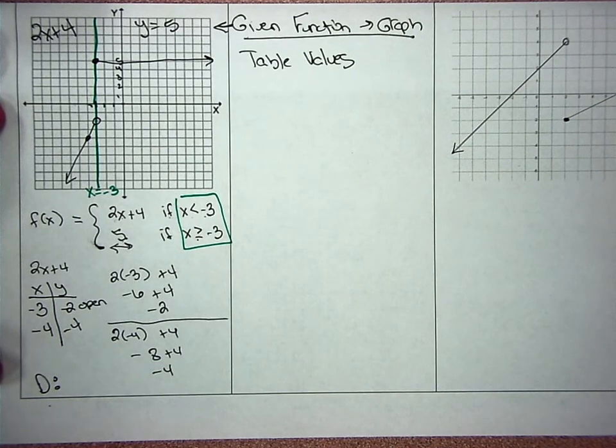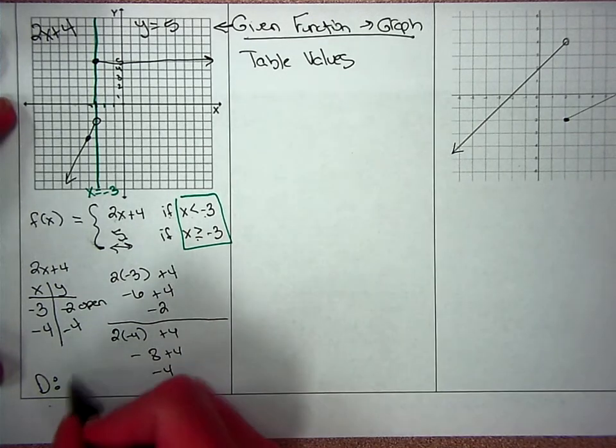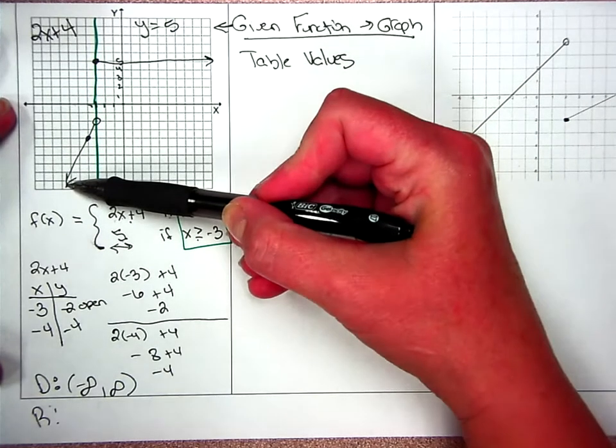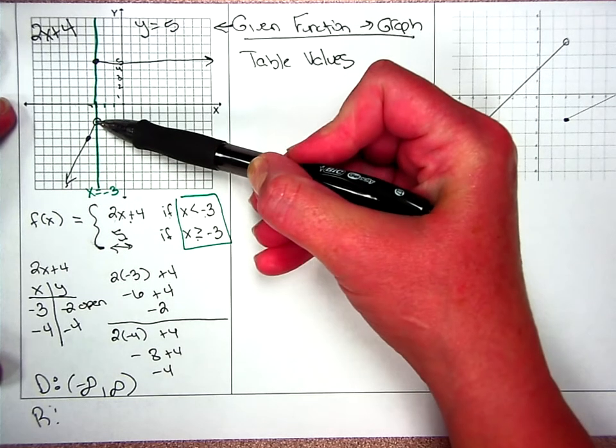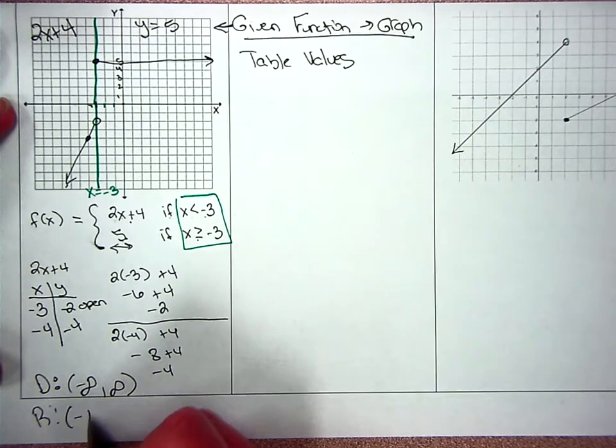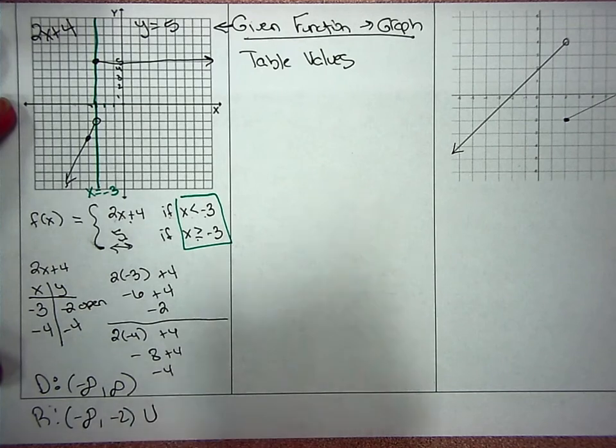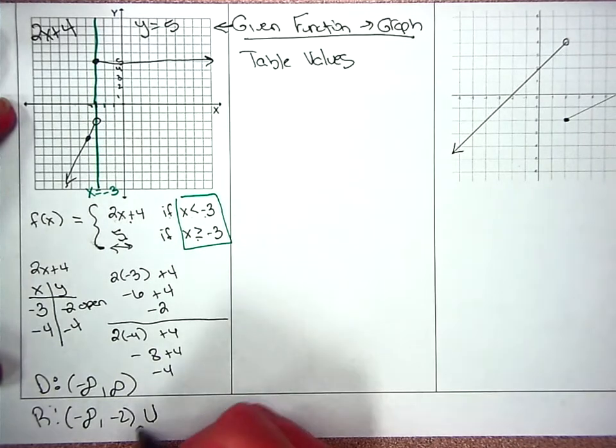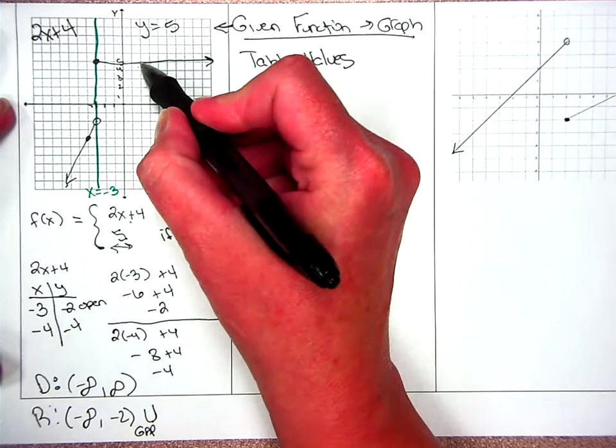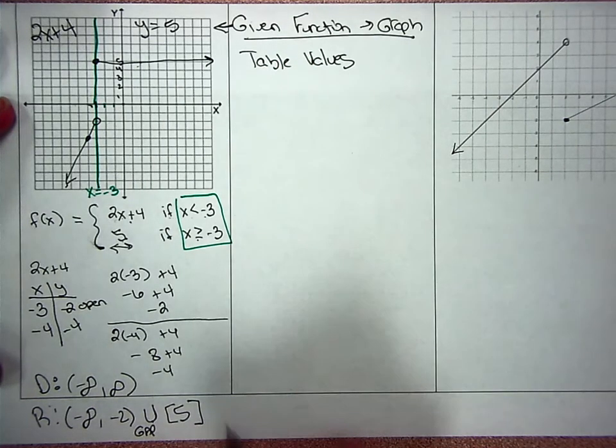You're going to need to state the domain and the range. The domain goes from negative infinity to positive infinity, because you can plug any value in for x that you want to. Your range goes from negative infinity and then it stops right there at that y value, which is negative 2. And then we're going to use this union symbol because I have a gap there. Any time you have a gap, you need the union. And then I have another y value up there at 5.